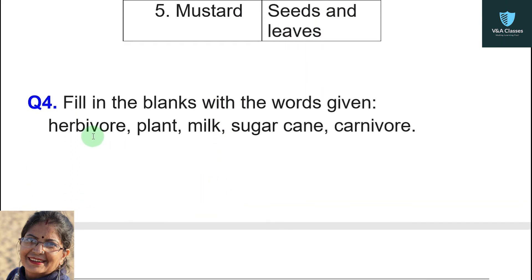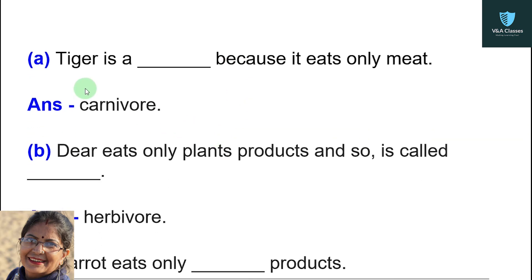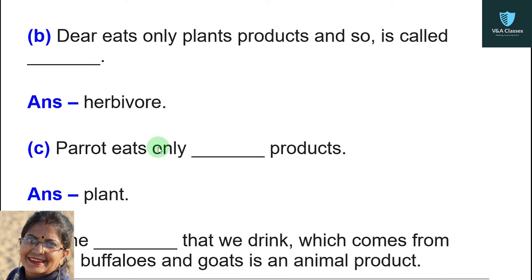Question number four: fill in the blanks with the given words — herbivore, plant, milk, sugar cane, carnivore. First blank: tiger is a blank because it eats only meat — answer: carnivore. Next: deer eats only plant products and so is called a blank — answer: herbivore.